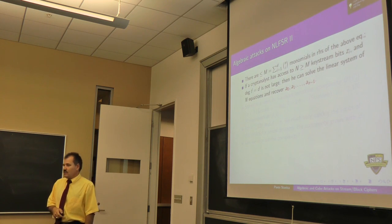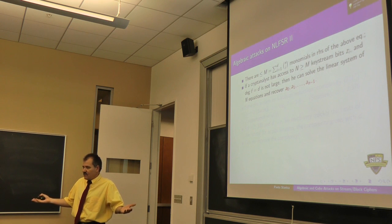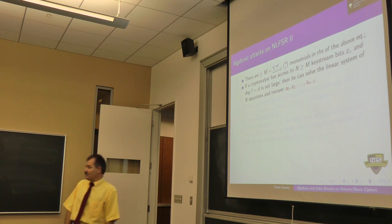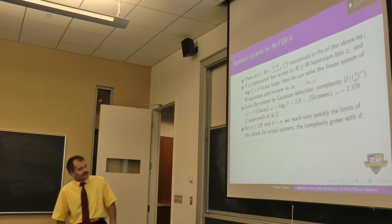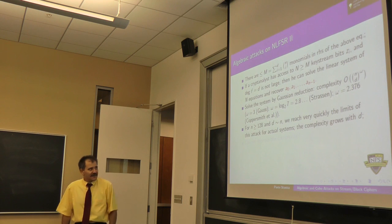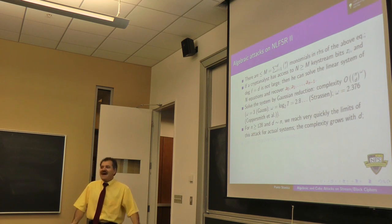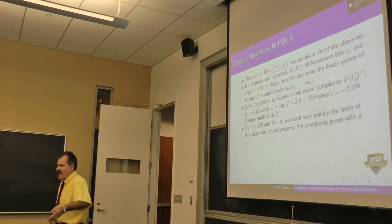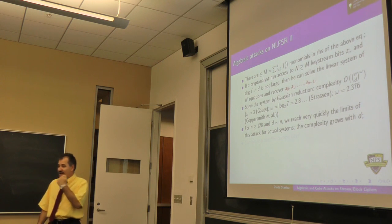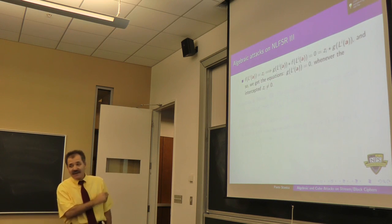The function has degree D, which could involve every single monomial of degree up to D. It can have these many monomials. If I have access to sufficiently many outputs zi's, I form a linear system and try to solve it. Linear algebra is very useful here. How difficult can this be? The complexity is big O of n choose D raised to the power of omega. If D is sufficiently large, close to n being say 128, this is completely out of our reach. We cannot solve that system.